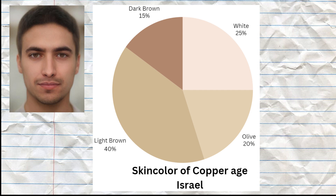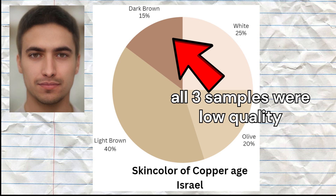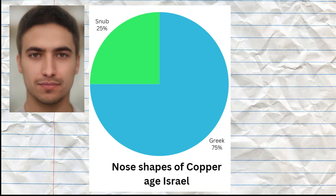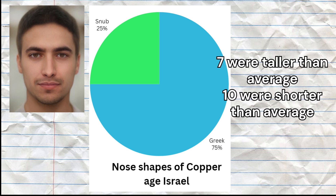The most common skin color among the samples was light brown, followed by white and olive, and three samples were predicted to have dark brown skin tone — all three of those being low quality samples. The most common hair shape among the Chalcolithic inhabitants of Israel was curly, but straight, wavy, and kinky hair was also found among them. The most common nose shape was Greek, which is an aquiline, long and narrow nose shape, and more than half of the samples were predicted to be shorter than average in height.